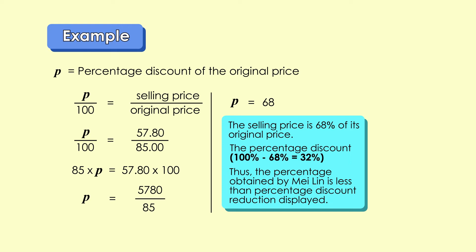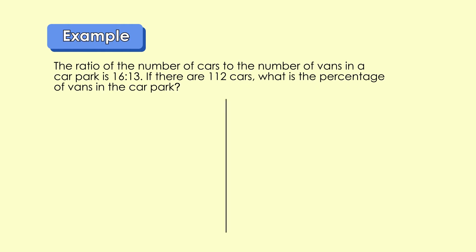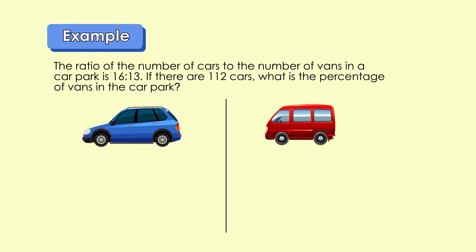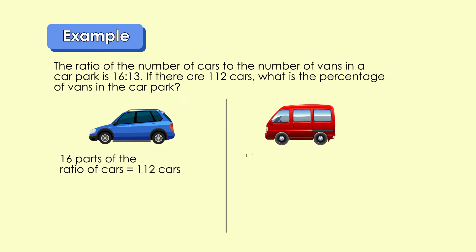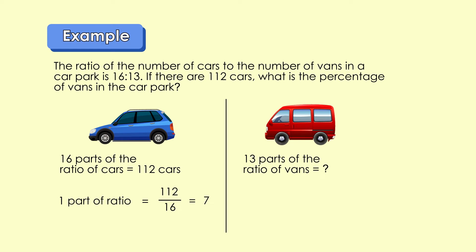So pupils, what you have learned today can actually be applied in solving problems in daily life. Let's look at some examples of problem solving. The ratio of the number of cars to the number of vans in a car park is 16 to 13. If there are 112 cars, what is the percentage of vans in the car park? The whole car park consists of 16 parts of cars and 13 parts of vans. If the 16 parts of cars are 112, let's find the value for one part. 112 over 16 equals 7, which means one part represents 7 cars.